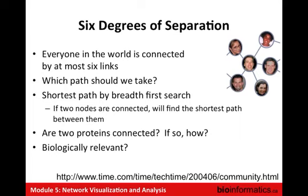A lot of network analysis methods have their basis in computer science and graph theory. One question to always ask when looking at a new type of network analysis is how biologically relevant it is. For instance, finding a shortest path between two proteins in a protein interaction network is interesting, but is that an actual signal transduction path? Maybe not — it may not consider context, or many other things you would need to know to determine whether that path is useful in a cell.